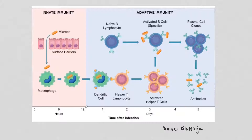Vaccination programs rely on this type of immunity. We essentially create memory cells against the pathogen we're being vaccinated against, so that when we're exposed to that pathogen, we won't get sick.